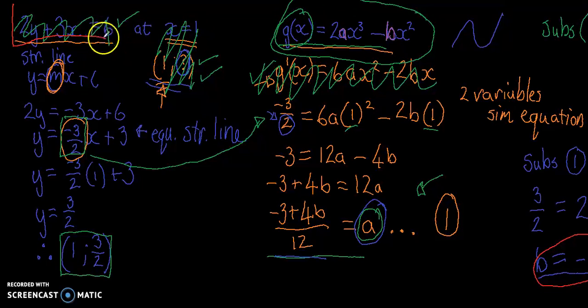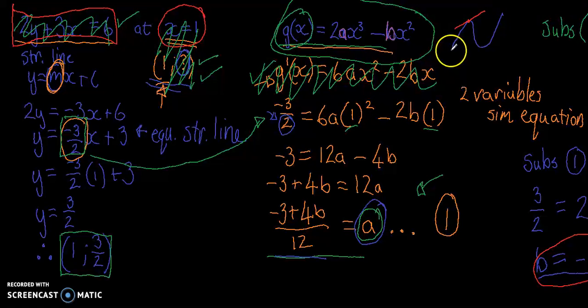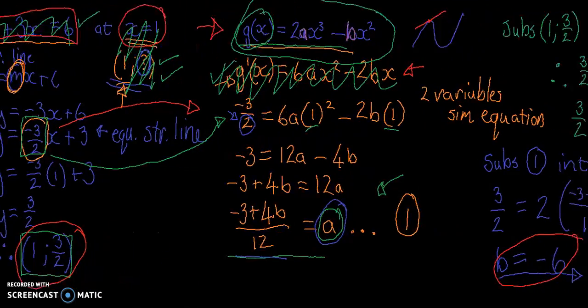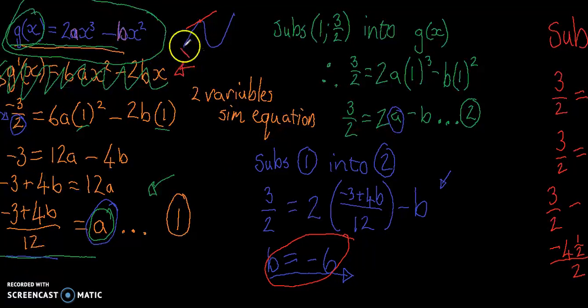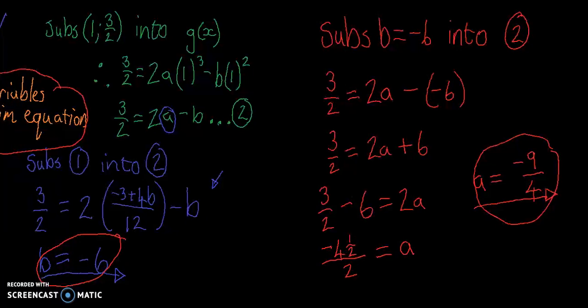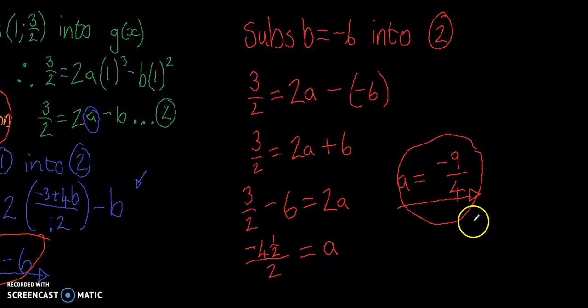So in the question, we were given the equation of the straight line which was the tangent to the curve. And we were given the value at what the straight line intersects with the curve, or at least the point where the tangent goes through. We were also given the equation of the tangent. And with all of this information, we needed to find the derivative and then make the derivative equal to the gradient of the straight line. After that, we also needed to find out what the y value of the coordinate was, so that we could substitute that back into the curve, the function. And that led us to a simultaneous equation, which then took us to our answers of b equals minus 6, and a equals minus 9 over 4.